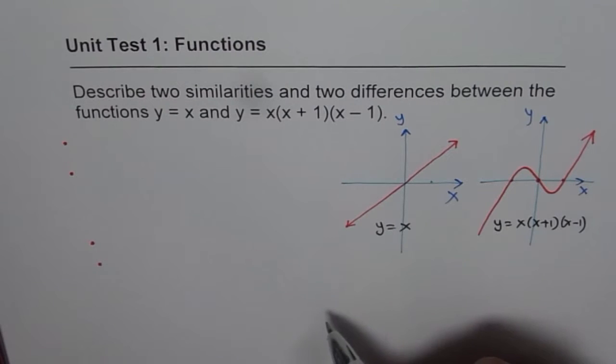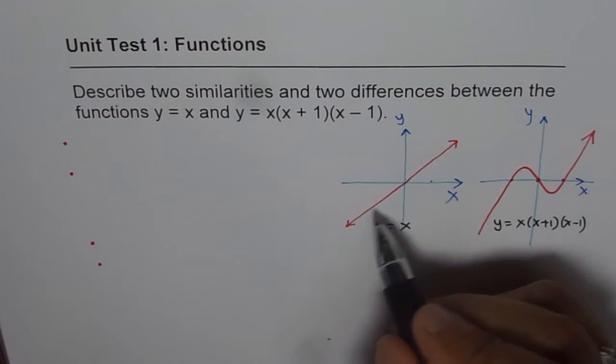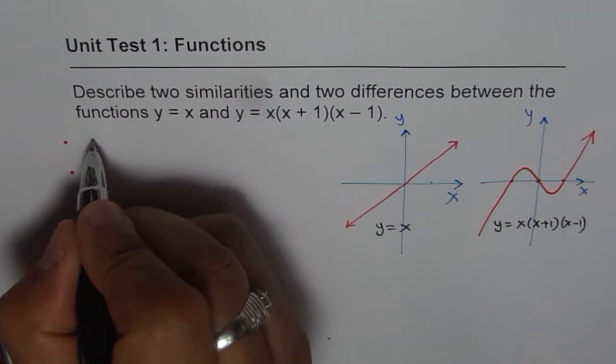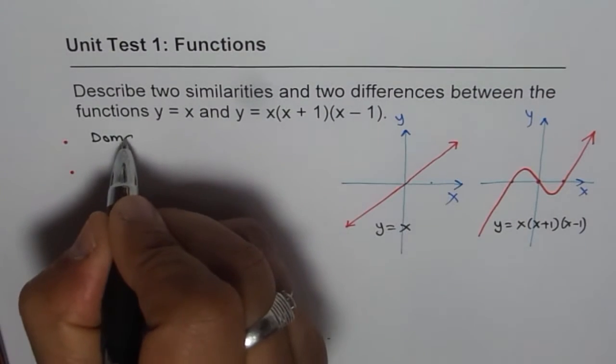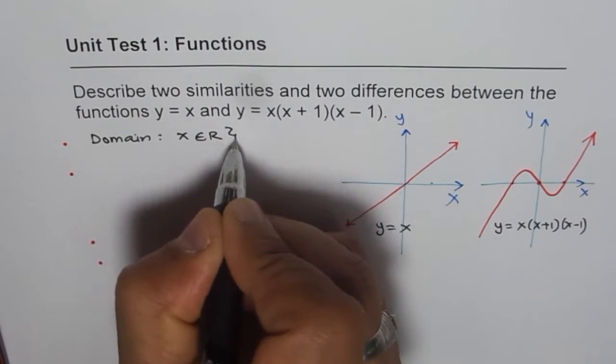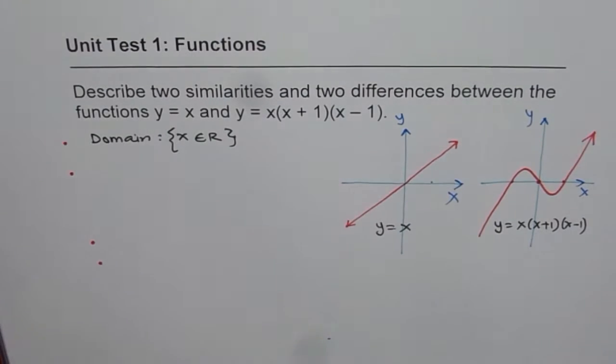As far as the similarities go, you can see both these functions pass through origin. They have no restriction in domain, they are continuous functions. We can write domain is x belongs to real numbers for both of them. That is the similarity.